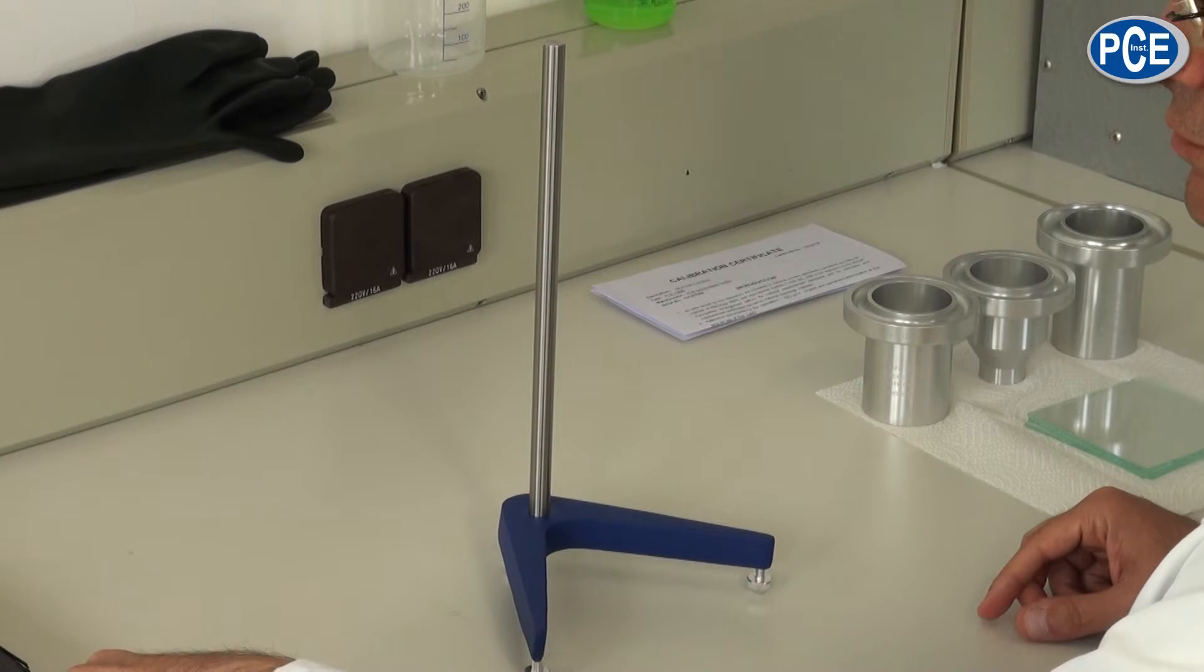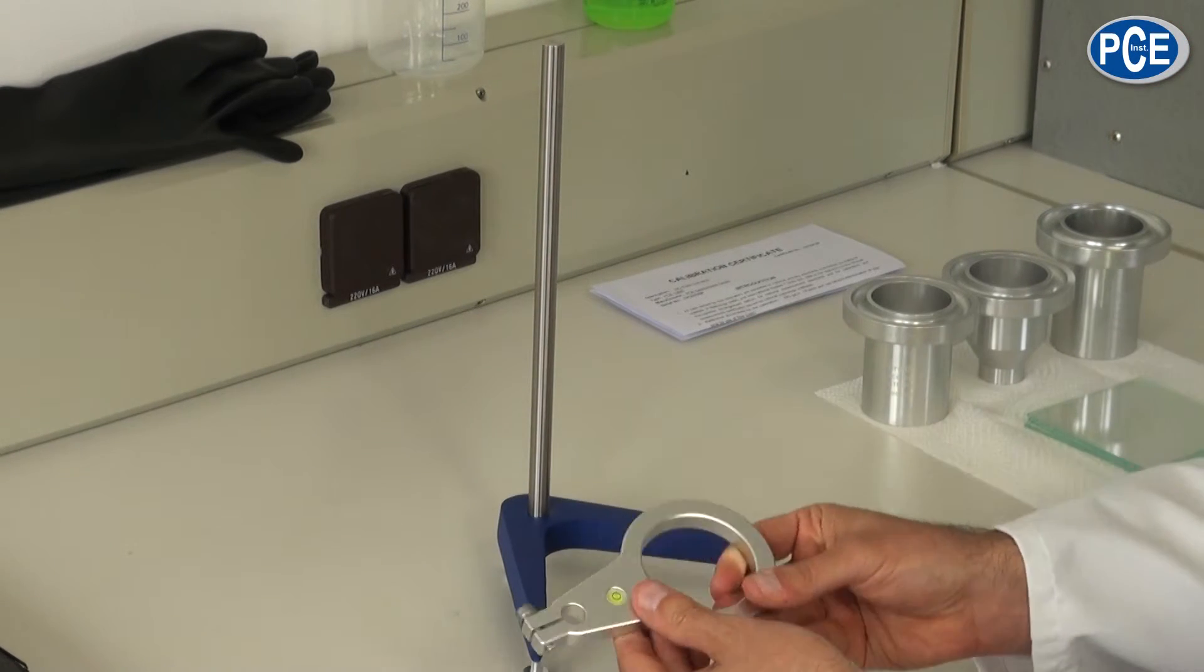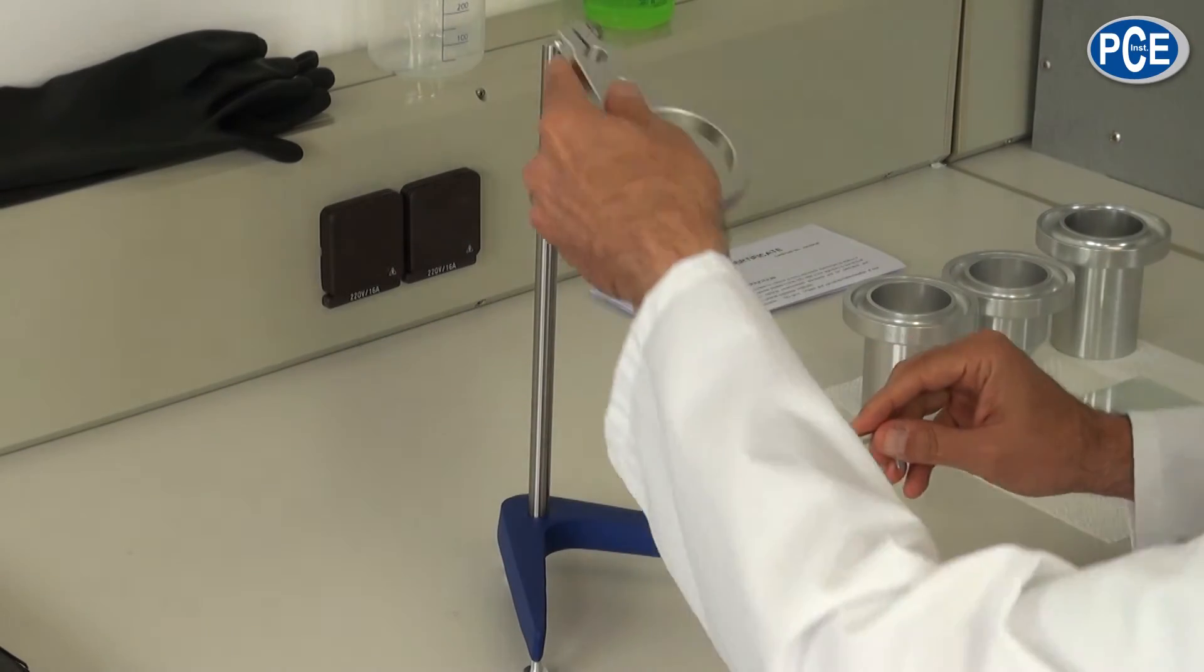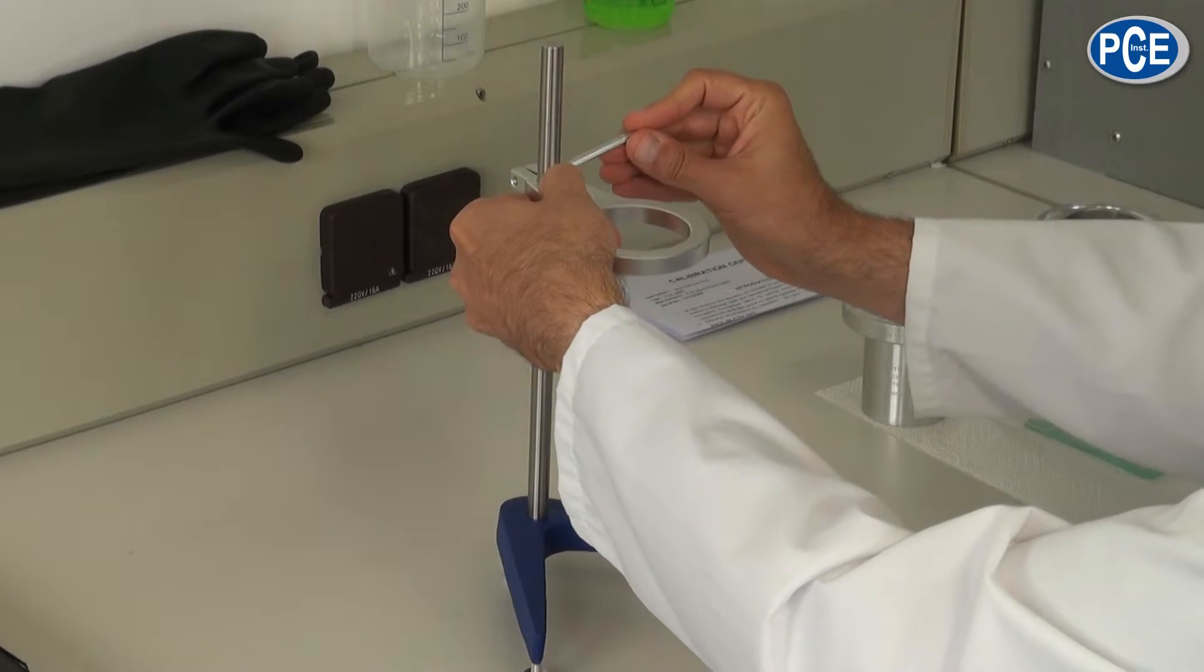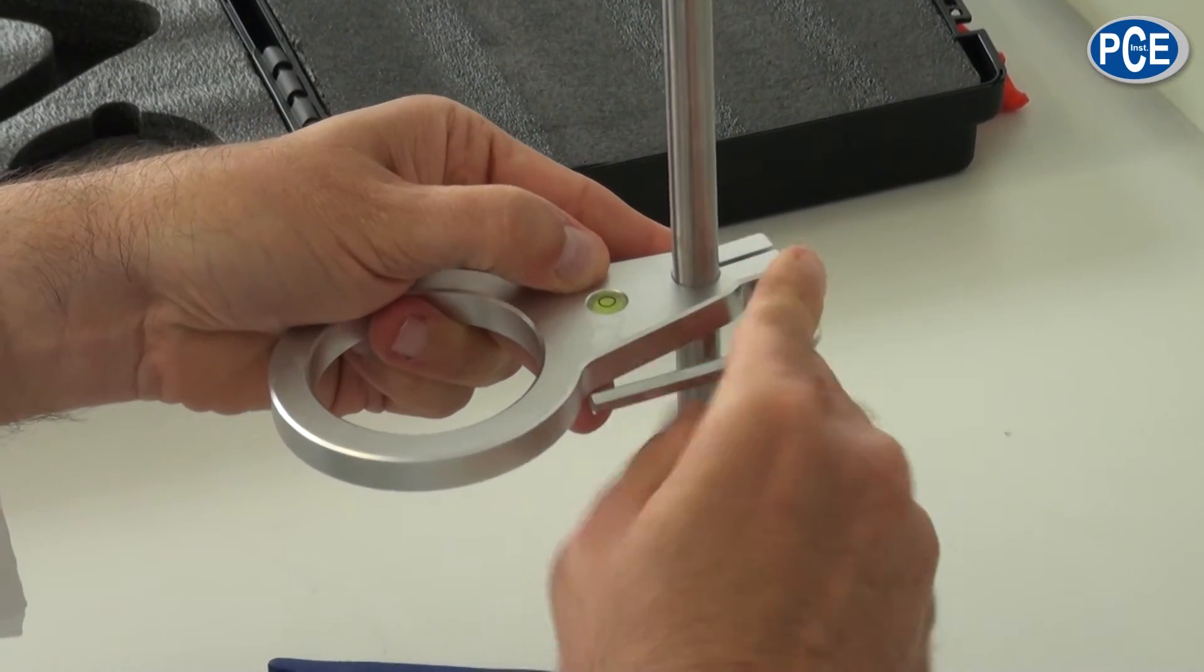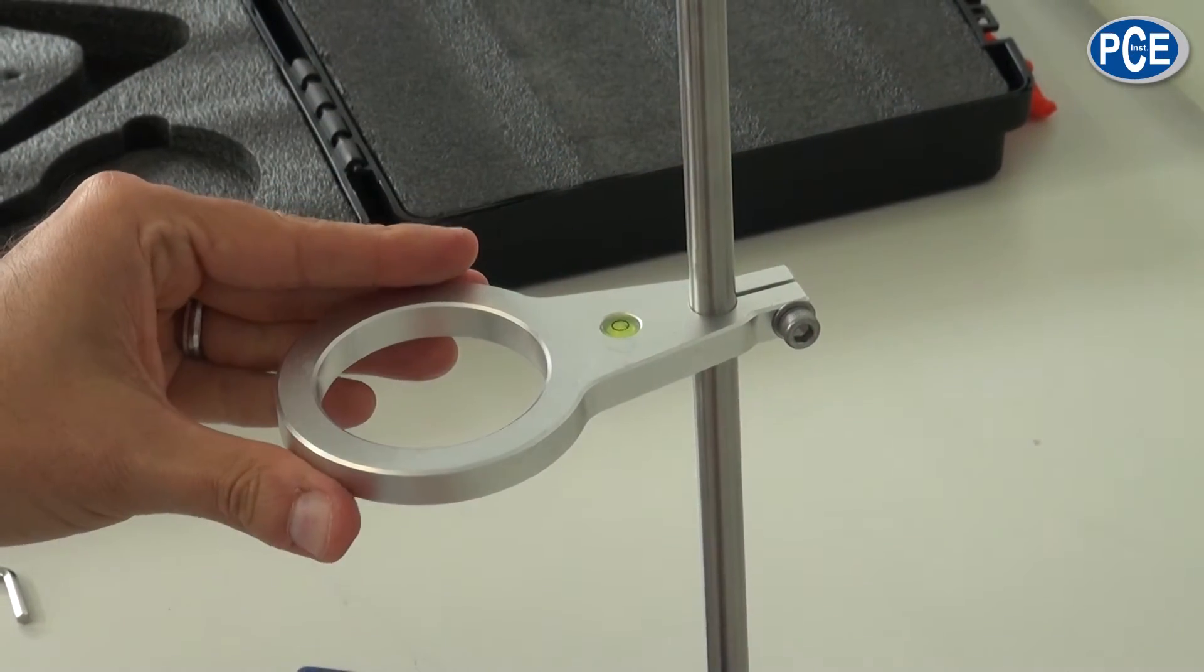Then the cup holder can be put on. The cup holder has a spirit level to level the cup. Now we put the cup holder on and fix it to the right height, and using the Allen key we tighten it up.